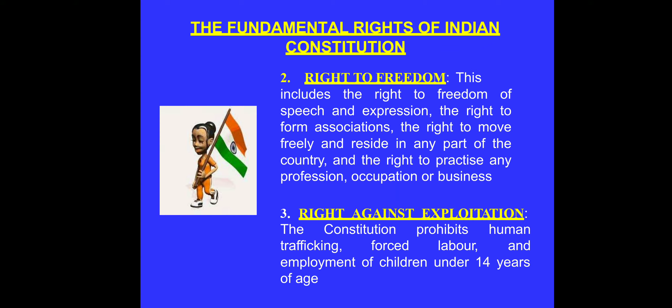The right against exploitation: the constitution has given us protection against human trafficking — including bonded labour of children and trafficking of women. Forced labour is prohibited. Employment of children below 14 years of age in homes, hotels, or dangerous workplaces is totally banned in the country. This is called the right against exploitation.